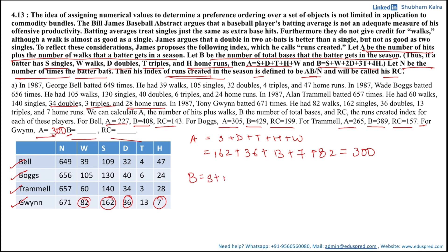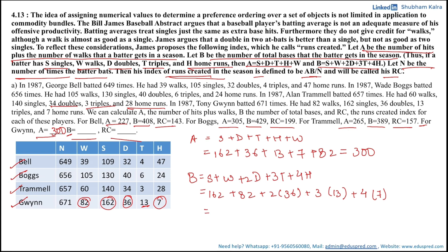Now let's calculate B, which equals S plus W plus 2D plus 3T plus 4H. For Gwynn: S is 162, W is 82, D is 36, T is 13, and H is 7. Computing: 162 plus 82 plus 2(36) plus 3(13) plus 4(7) gives B equals 383.